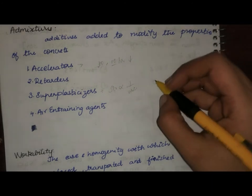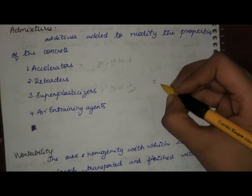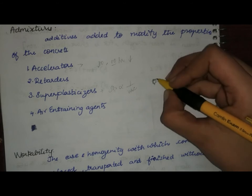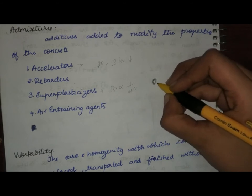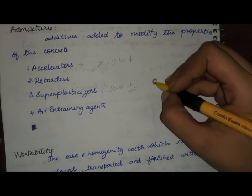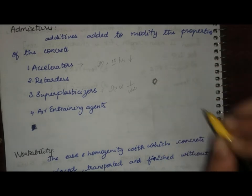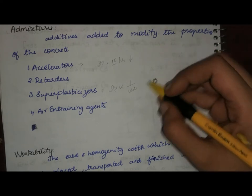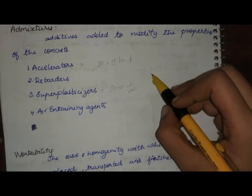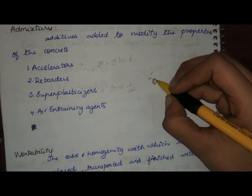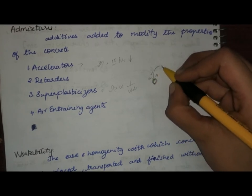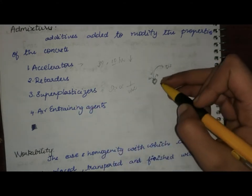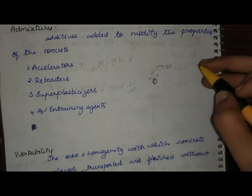Inside the concrete, a water droplet may be surrounded by cement particles. Due to surface tension, these cement particles create a flocculating effect and hold the water inside, so this water is not utilized for the hydration reaction. When we add the super plasticizer, it will deflocculate these cement particles and the water is dispersed — that is why we use super plasticizers, and the mix design water is more than enough for the complete hydration reaction.